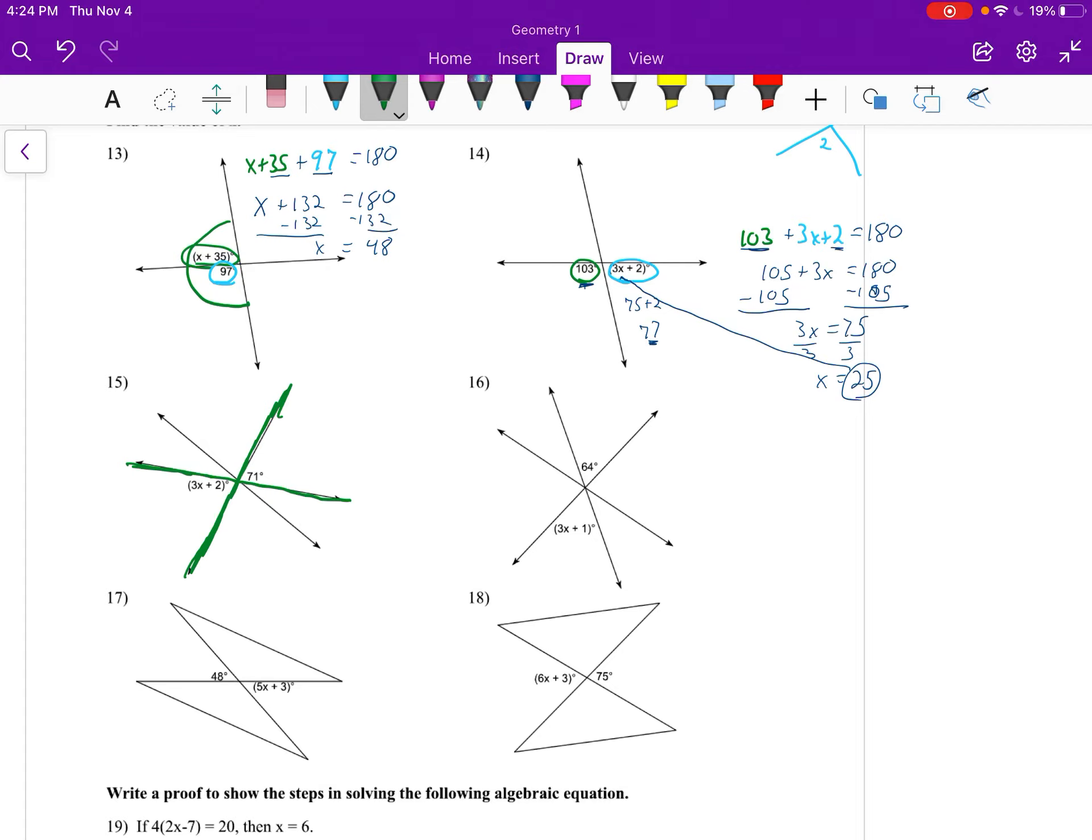When we have vertical angles, they have to equal each other. Do not add them together to equal 180. So 3x plus 2 is equal to 71. We're going to solve, subtract 2. We get 3x equals 69, divide both sides by 3, and x equals 23.